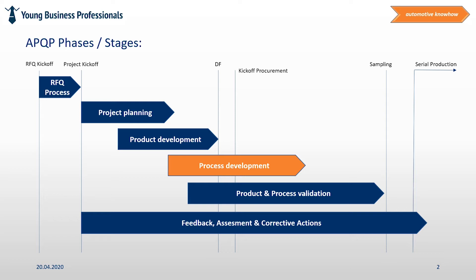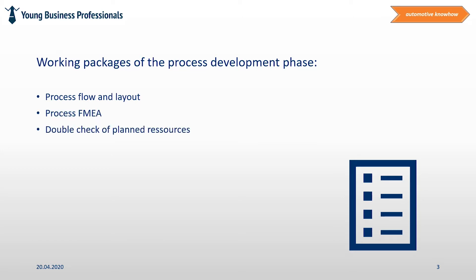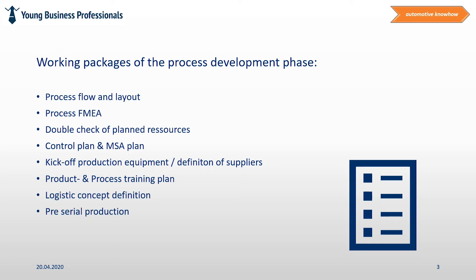Now let's take a more detailed look at all single working packages of APQP Phase 3. The following working packages are part of the process design phase: process flow and layout, process FMEA, double check of plant resources, control plan and MSA plan, kickoff of production equipment and definition of suppliers, product and process trainings to be planned, logistic concept definition, pre-serial production, and the quality gate phase 3.